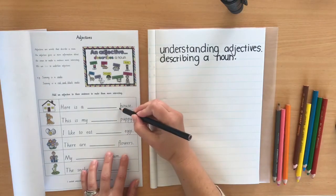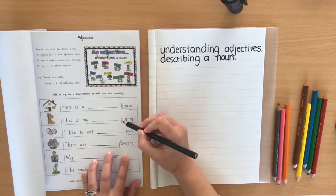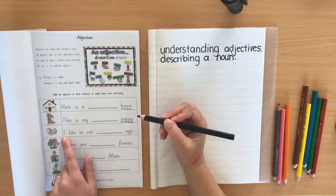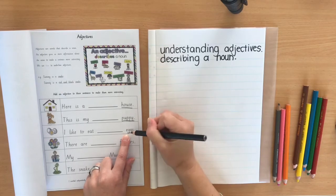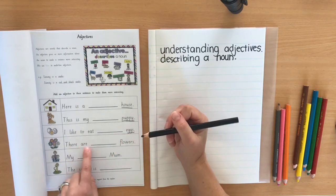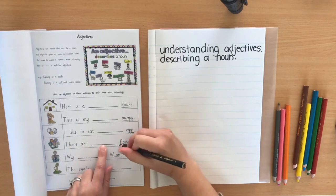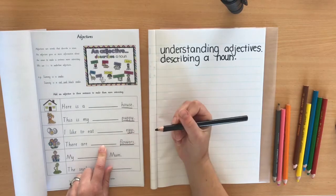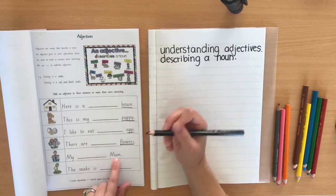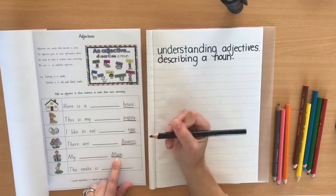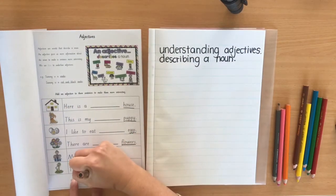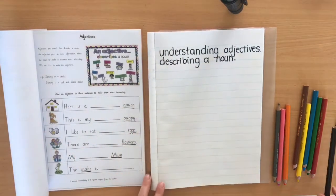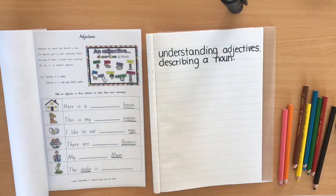We're adding extra words — extra describers — to describe the noun. The noun in the first sentence is 'house,' then 'puppy.' In 'I like to eat eggs,' the noun is 'eggs.' There are also 'something flowers' — flowers is the noun. 'My something mum' — we're describing mum. 'The snake is something' — we're describing the snake.